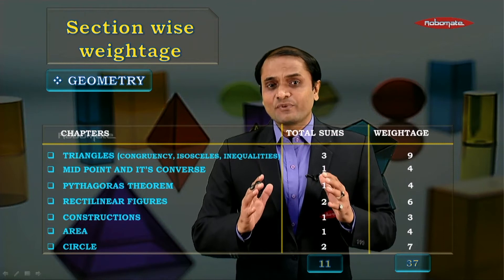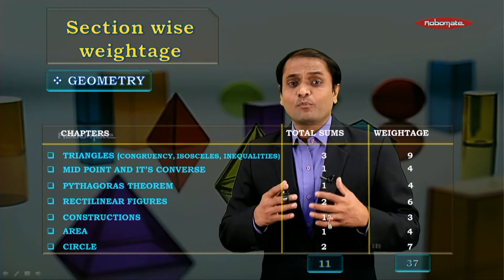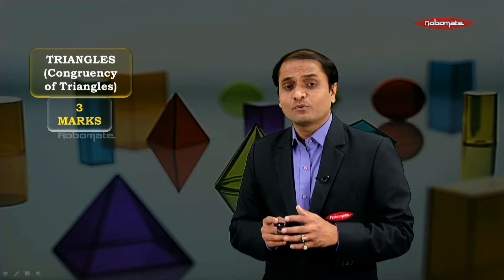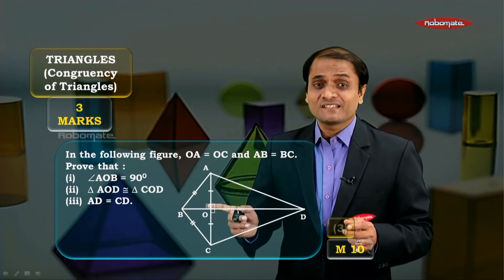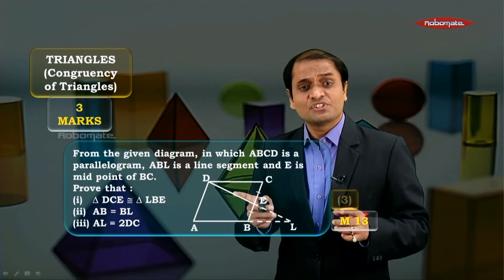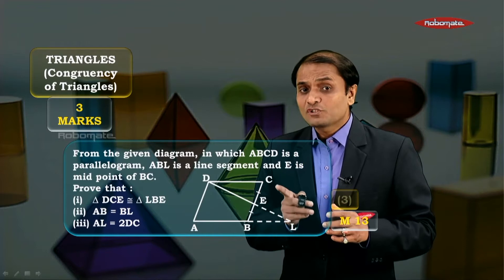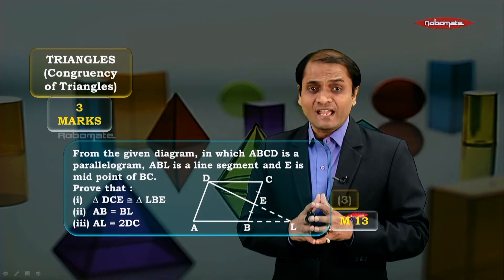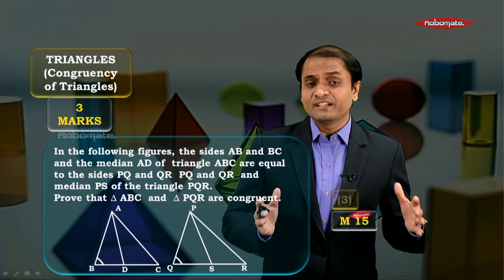You can expect around 11 questions from the section of geometry, weighing 37 marks — that is the highest weightage of any section in your ninth standard. Beginning with triangles, the first subtopic is congruency. You can expect one question of three marks. Here is a sample question in module number 10 where you have to use the SAS test and the SSS test. Here is another question based on alternate angles associated with opposite sides of a parallelogram, also using the concept of vertically opposite angles — in module number 13.